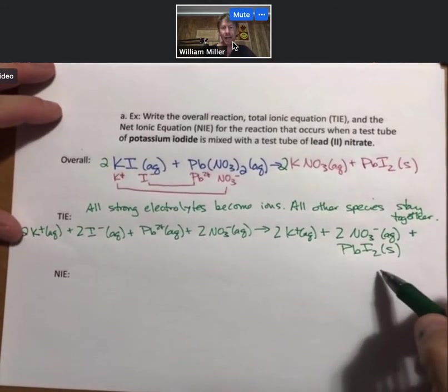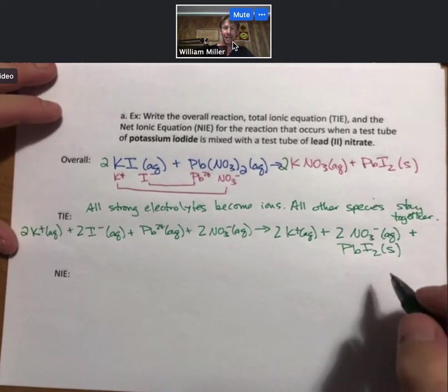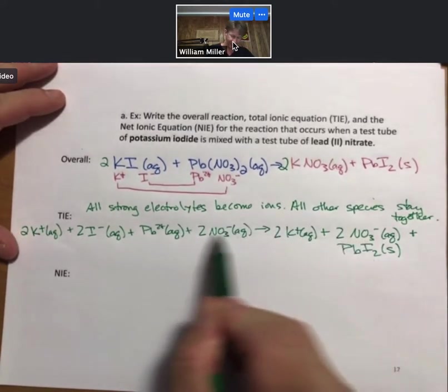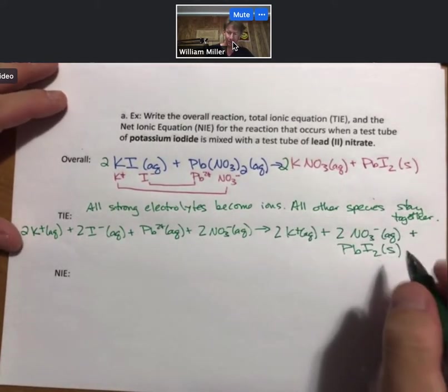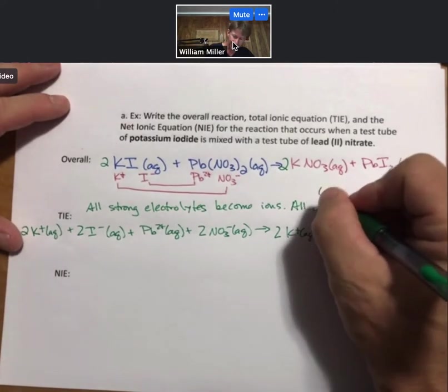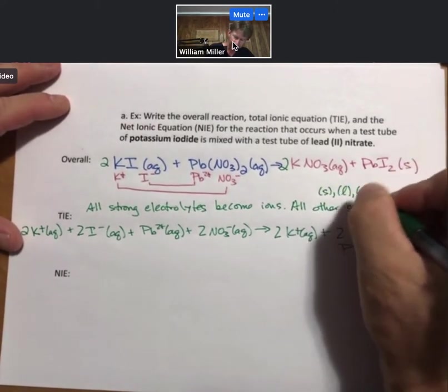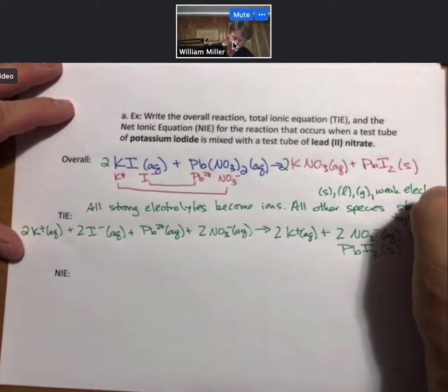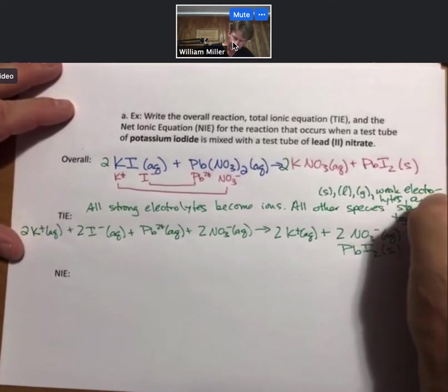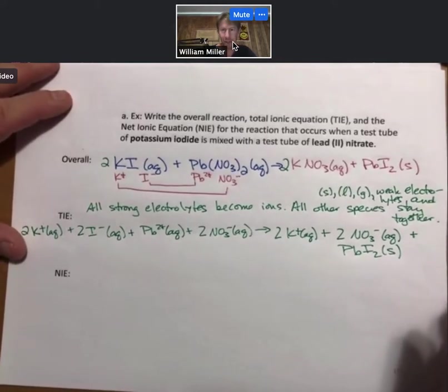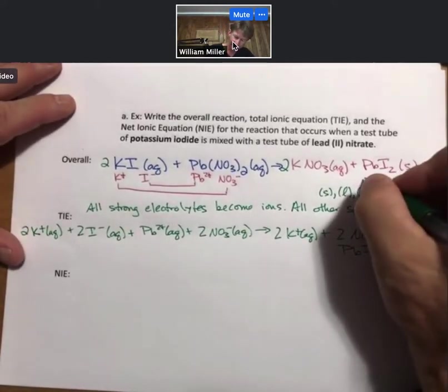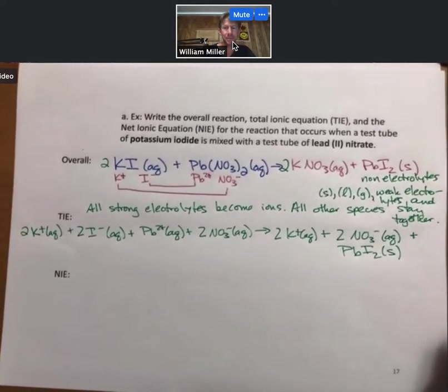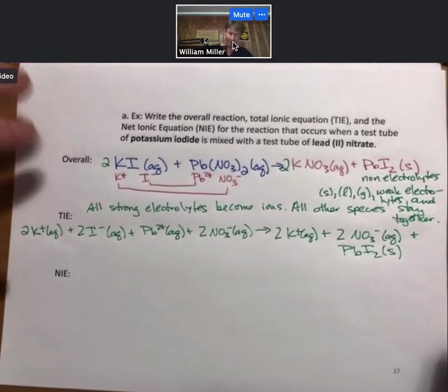But the lead 2 iodide does become a solid. It is not aqueous anymore. And so what I mean is all strong electrolytes become ions. You can see that. All other species stay together. Those other species are going to be solids, liquids, gases, weak electrolytes, and non-electrolytes. So everything else is not broken into ions. And we'll see examples of this.